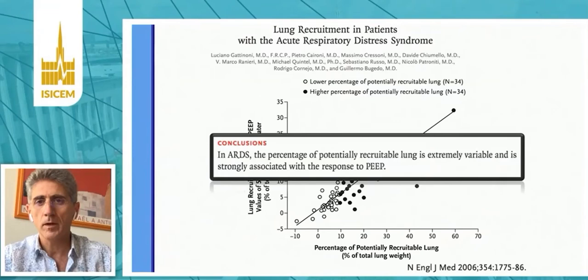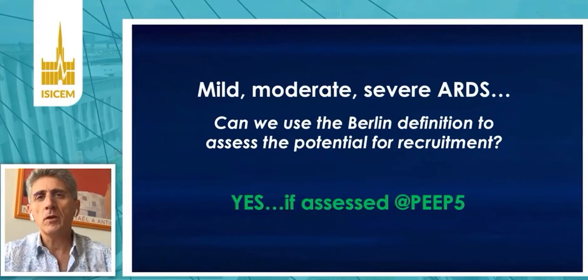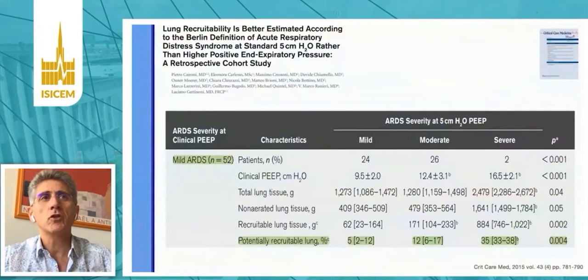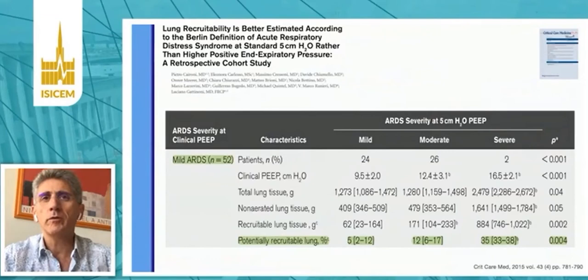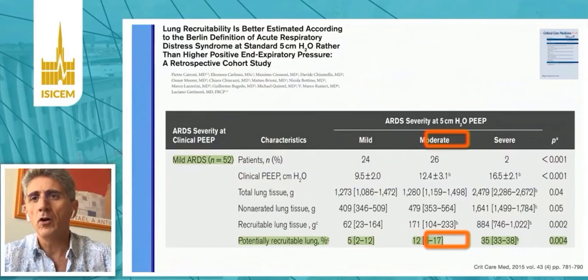Can we identify patients and their potential for recruitment based on Berlin severity? Can we look at patients with mild, moderate, and severe ARDS and learn something regarding their potential for lung recruitment? The answer is yes, if you assess this with a PEEP of 5 cmH2O. This is what has been shown in a very nice study from Pietro Chironi, where they correlated the potential for lung recruitment and severity as assessed by the Berlin definition. Patients with mild ARDS have a lower amount of potentially recruitable lung compared to patients with moderate or severe ARDS.